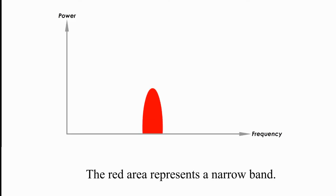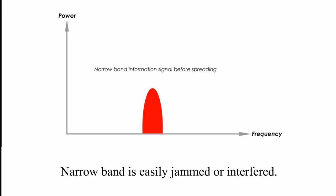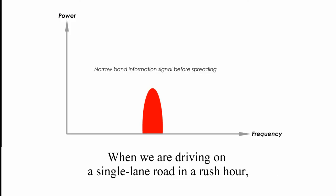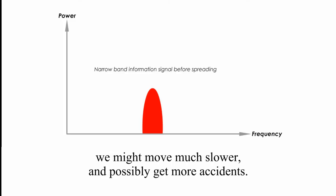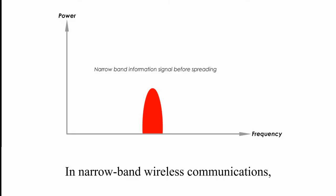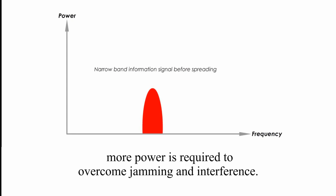The red area represents narrowband. Narrowband is easily jammed or interfered. When we are driving on a single lane road in a rush hour, we might move much slower and possibly get more accidents. In narrowband wireless communications, more power is required to overcome jamming and interference.